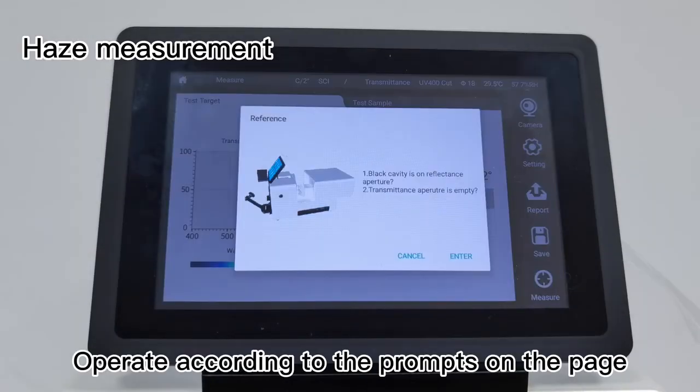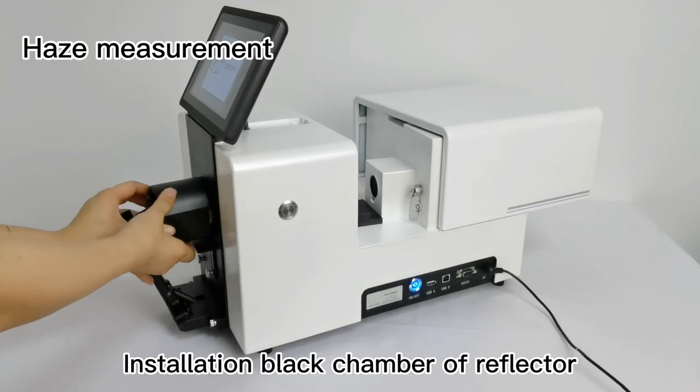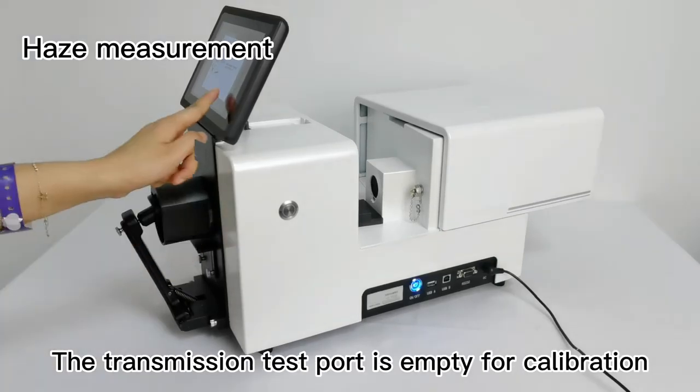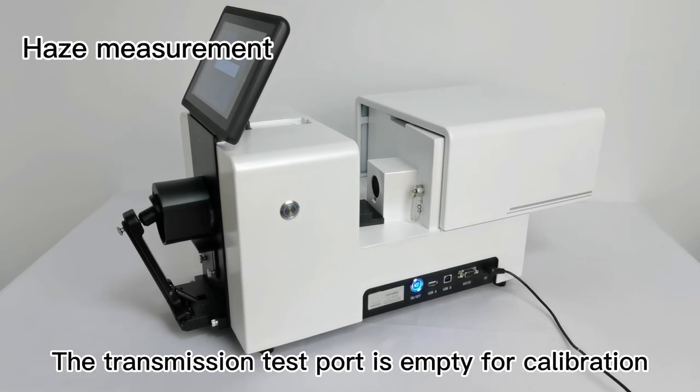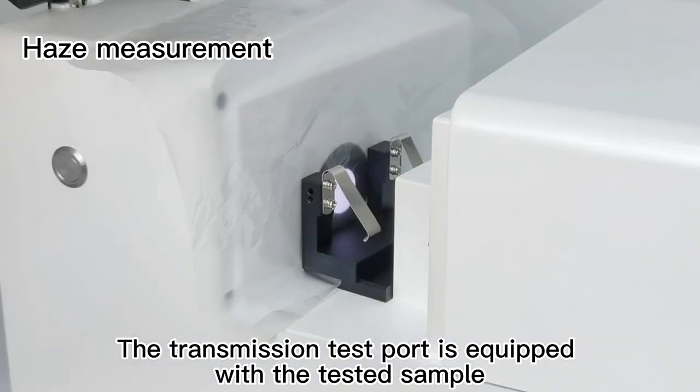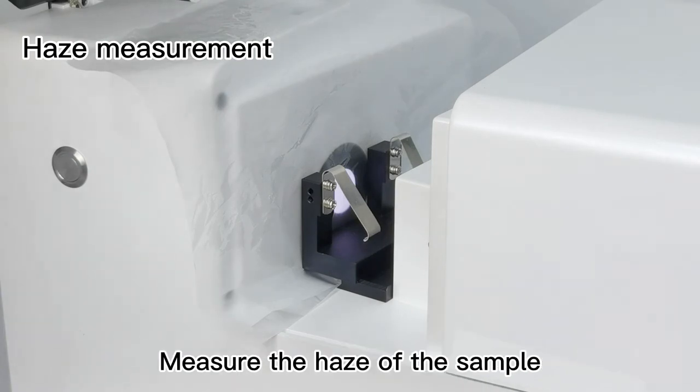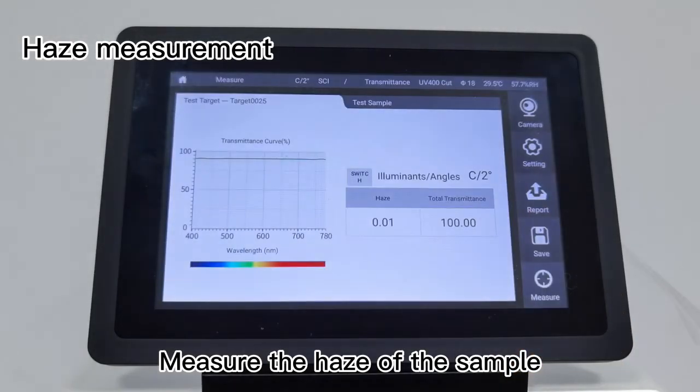Operate according to the prompt on the page. Installation black chamber of reflector, the transmission test part is empty for calibration. The transmission test part is equipped with the tested sample. Measure the height of the sample.